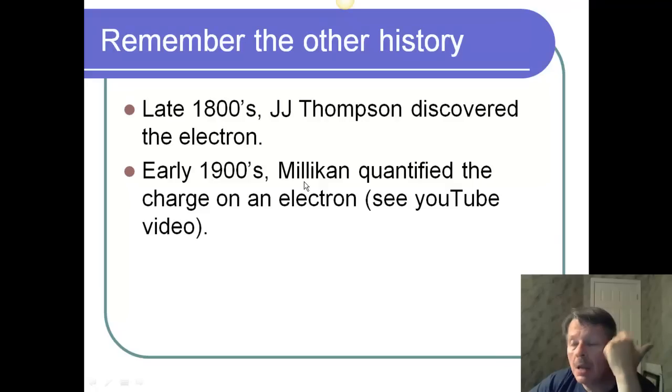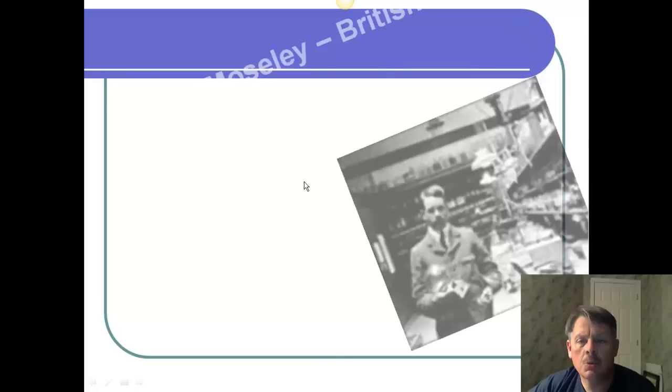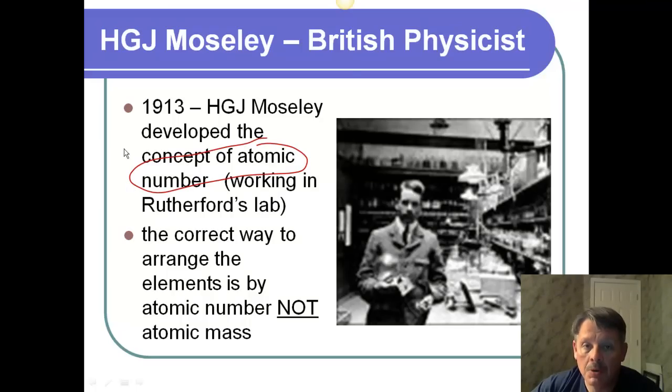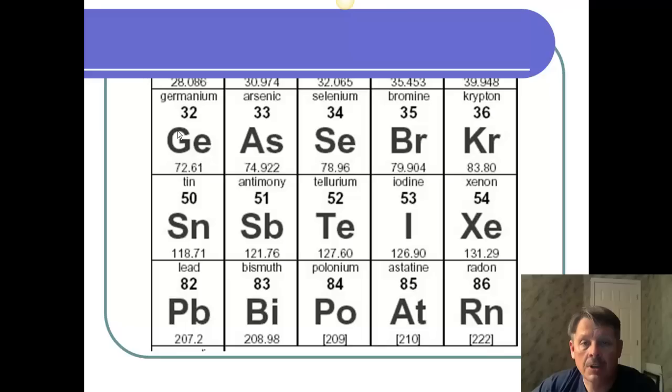In the late 1800s, where Mendeleev was in the middle 1800s, Thompson discovered the electron. And in the early 1900s, Millikan quantified the charge on an electron. And you can see a YouTube video on that, which I reference in your worksheet list. So, all of this was going on in the late 1800s, early 1900s. We're learning so much more about the atom. In 1913, there was a guy who came along named Mosley, who's a British physicist. And he developed the concept of an atomic number, i.e. protons. Remember that at this point, we don't have anything. These are protons. Atomic number implies protons. And they hadn't known about protons before. So, what he figured out was the correct way to arrange the element is by atomic number and not by atomic mass. This was in 1913 when he figured this out. So, we're about 100 years ago.